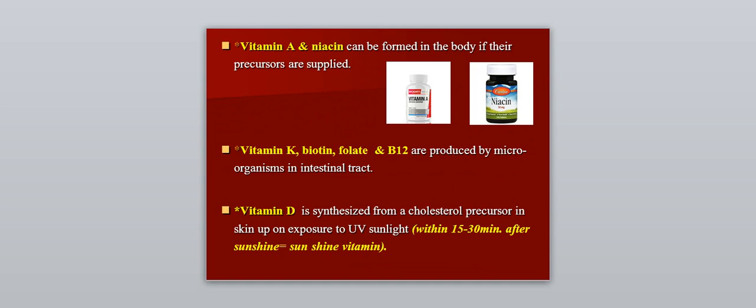Vitamin A and niacin can be formed in our body if the precursors are supplied. Vitamin K, biotin, folate, and B12 are produced by microorganisms in our intestinal tract. Vitamin D is synthesized from a cholesterol precursor in the skin when there is exposure to ultraviolet sunlight within 15 to 30 minutes of sunlight exposure. We call it the sunshine vitamin.